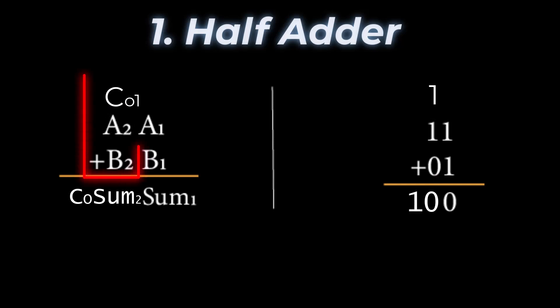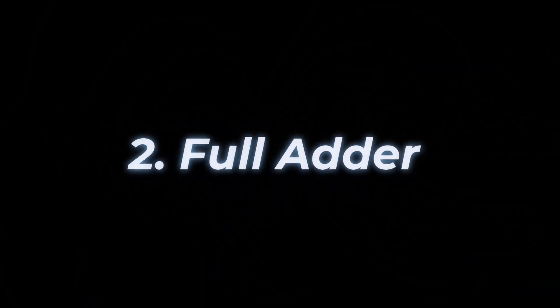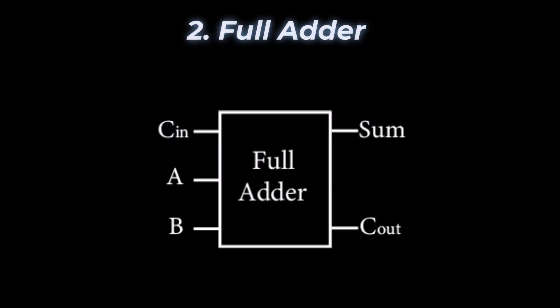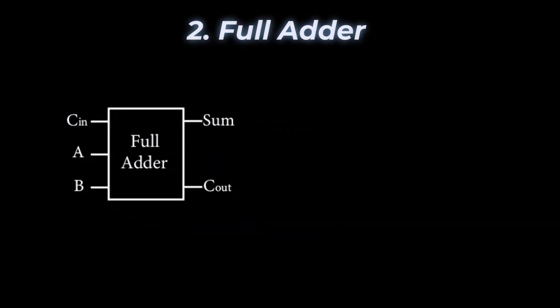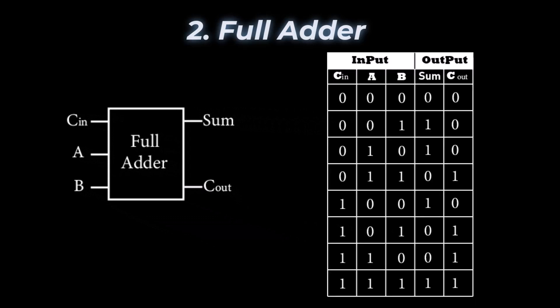For a proper adder function, we need a circuit that can perform addition on three input digits. This is why the full adder was created. A full adder is a digital circuit that adds three binary digits together. It has three inputs called A, B, and Cin, and two outputs called sum and Cout (carry out), where Cin is the carry from the previous lower significant position.